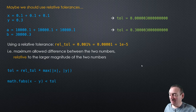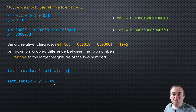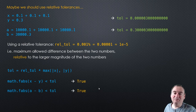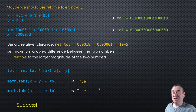So in this case, if we calculate using these tolerances and use the same formula as before for an absolute tolerance, that will evaluate to true. And the second one with a minus b will also evaluate to true. In other words — success, we've solved it.